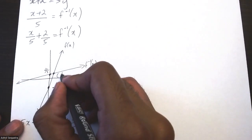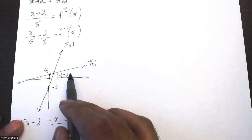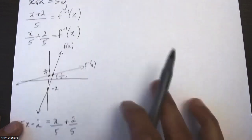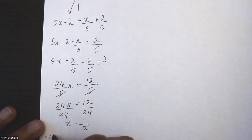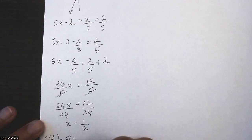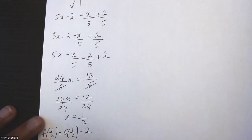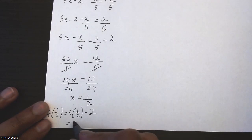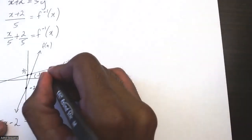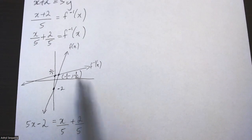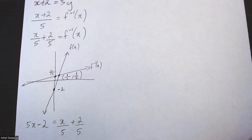The x-value of the intersection point is 1/2. To find the y-value, I substitute 1/2 into the original function: f(1/2) equals 5 times 1/2 minus 2, which also gives 1/2. So the intersection point between the original function and its inverse is (1/2, 1/2).